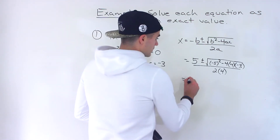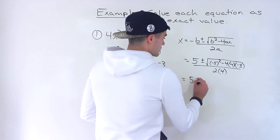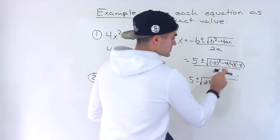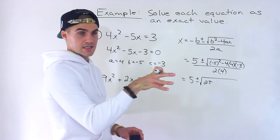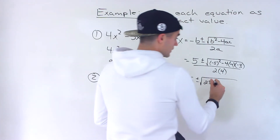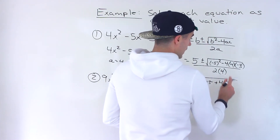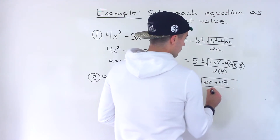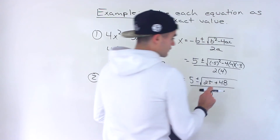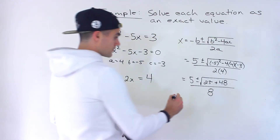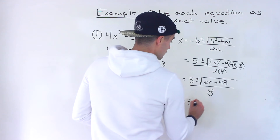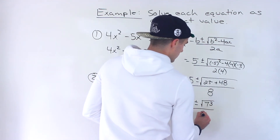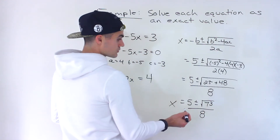So we'll have five plus or minus: (-5)² is 25, then negative four times four is negative 16, times negative three gives us positive 48 — these two negatives make a positive. This is all over eight. And then 25 plus 48 gives us 73. So we would have five plus or minus root 73, over eight.